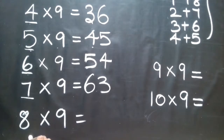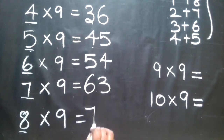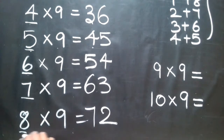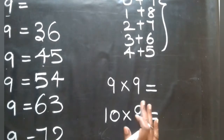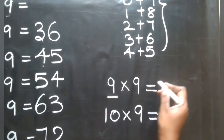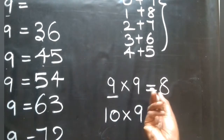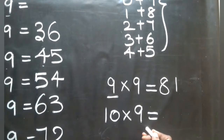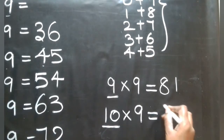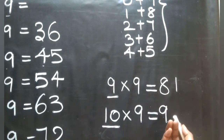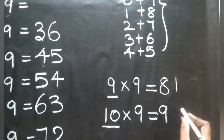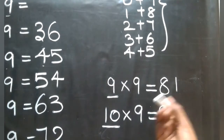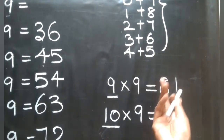For 8 times 9: the number is 8, the before number is 7 — add 9 to 2, so 8 times 9 is 72. For 9 times 9: the before number is 8 — add 9 to 1, so 9 times 9 is 81. And 10 times 9: the before number is 9 — add 9 to 0, giving 90. So 9 plus 0 is 9, and 8 plus 1 is 9. This trick applies up to 10 times.